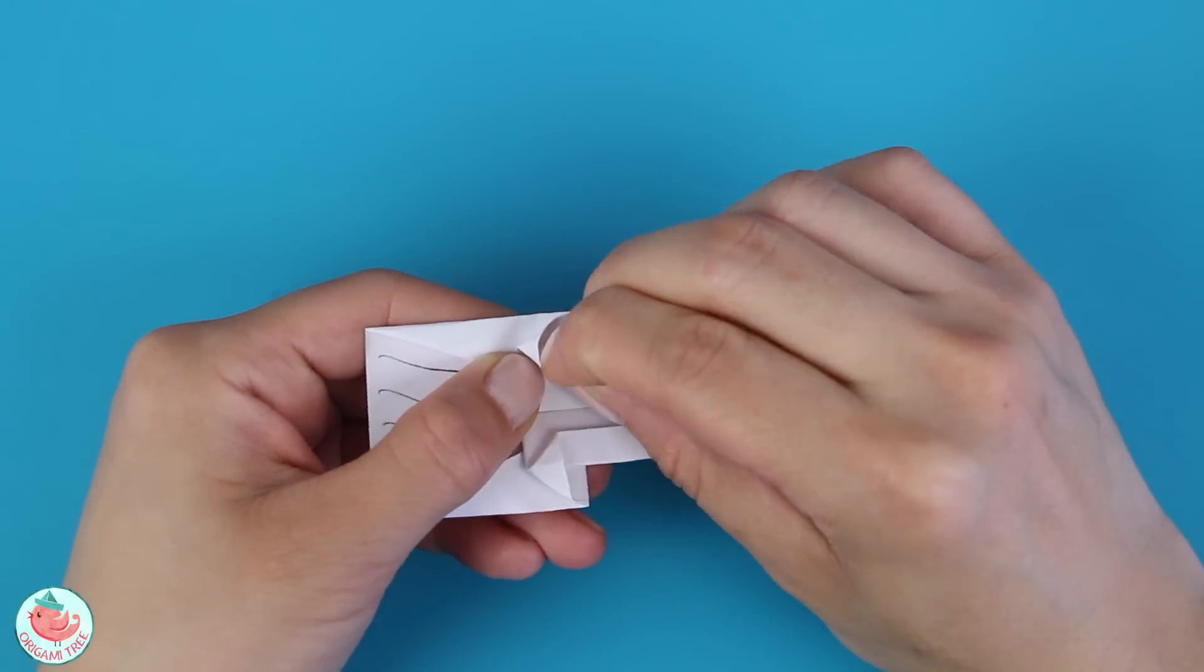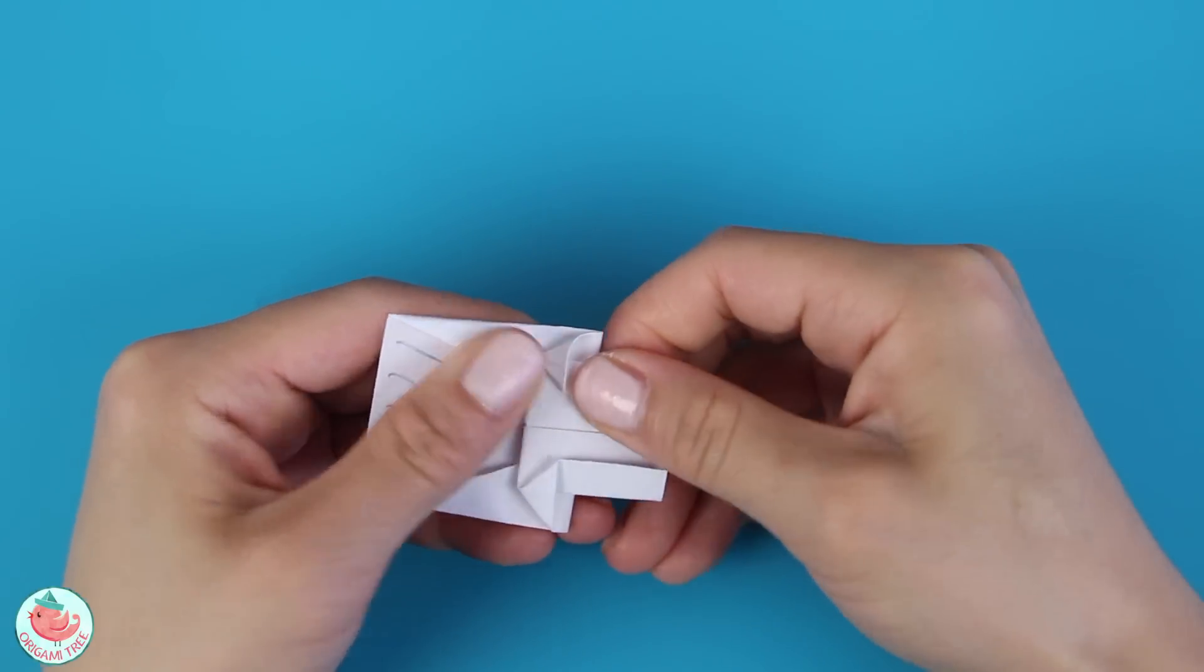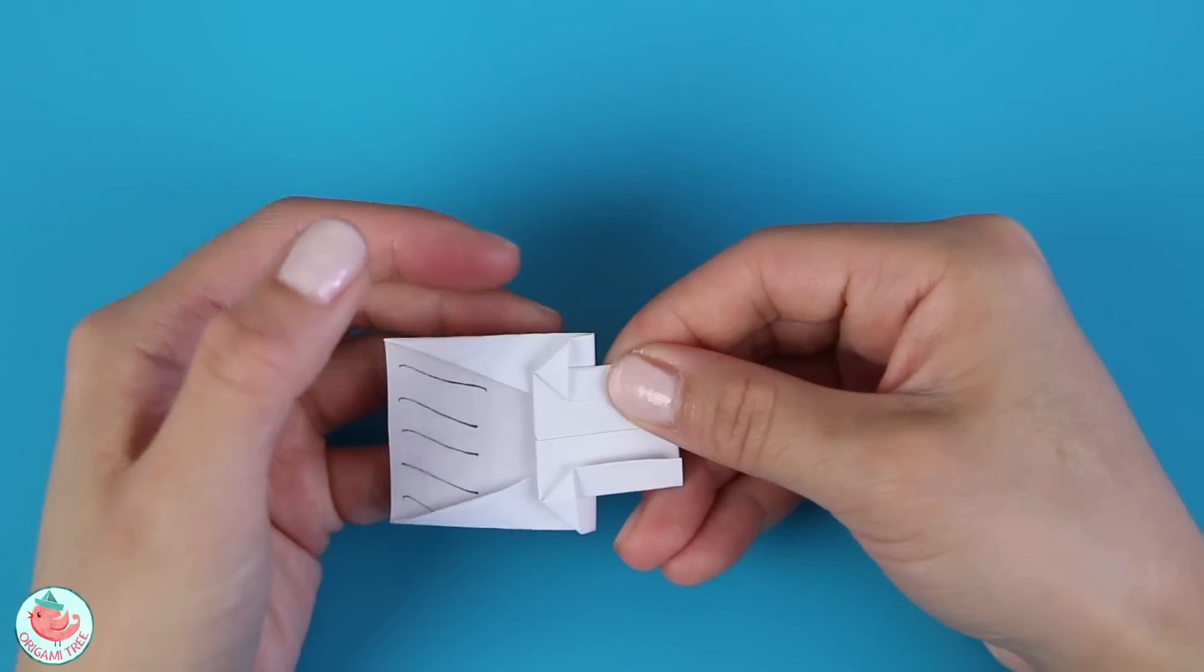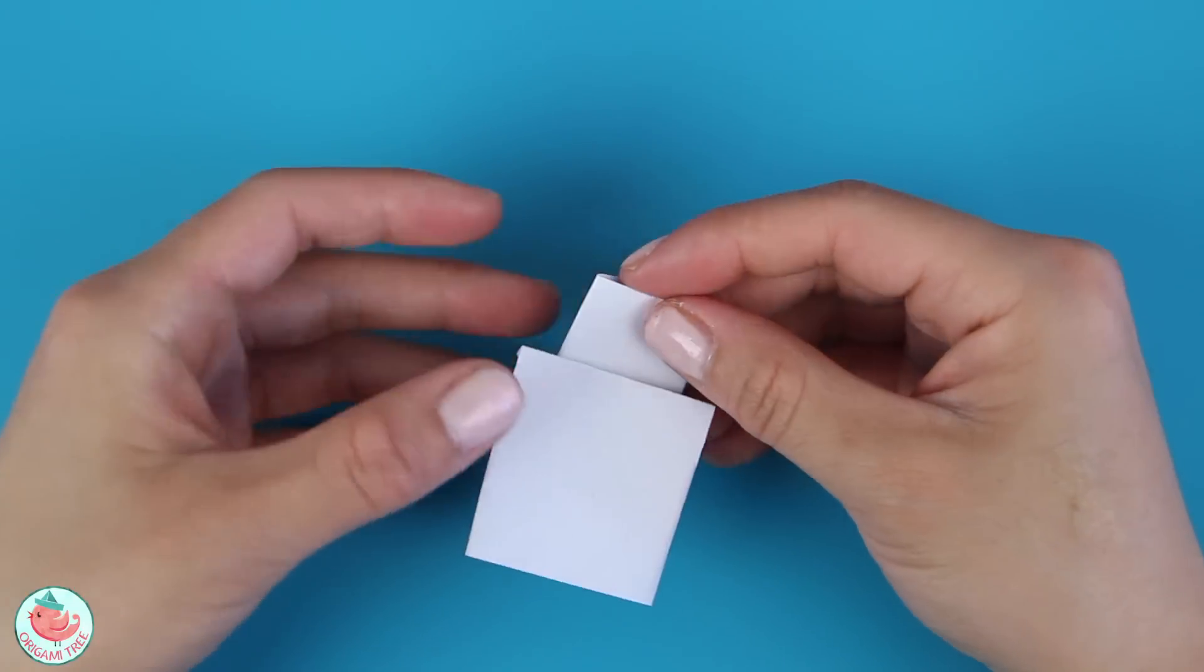And then repeat the same thing at the top. So you're going to fold it down. Crease it in. And then flatten this triangle that naturally forms. Then you're going to flip the whole thing over.